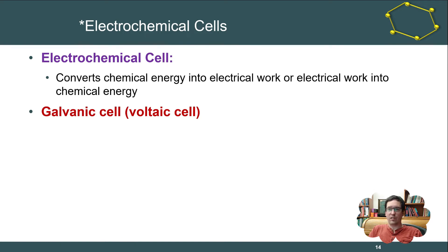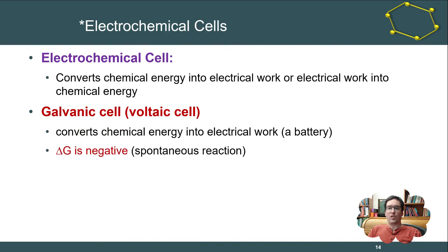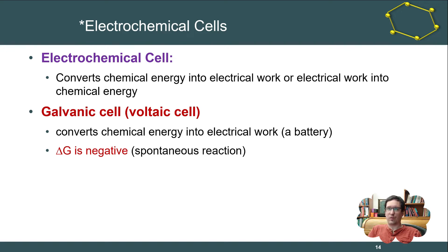A galvanic cell, also commonly called a voltaic cell, converts chemical energy into electrical work — that is our battery cell. The Gibbs energy is negative, so there's a thermodynamic drive for the reaction to proceed as written. This reaction is spontaneous; it's what happens in a fully charged battery. As the battery discharges, the Gibbs energy slowly approaches zero and eventually reaches thermodynamic equilibrium — at that point we have a dead cell.